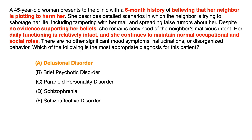Although they have this fixed false belief that something untrue is happening, they work, maintain relationships, go to school — they're able to function and go about a relatively normal life. On your exam, the patient probably won't have any hallucinations. But if hallucinations are present, they'll be consistent with the theme of the delusion — not bizarre and seemingly random.